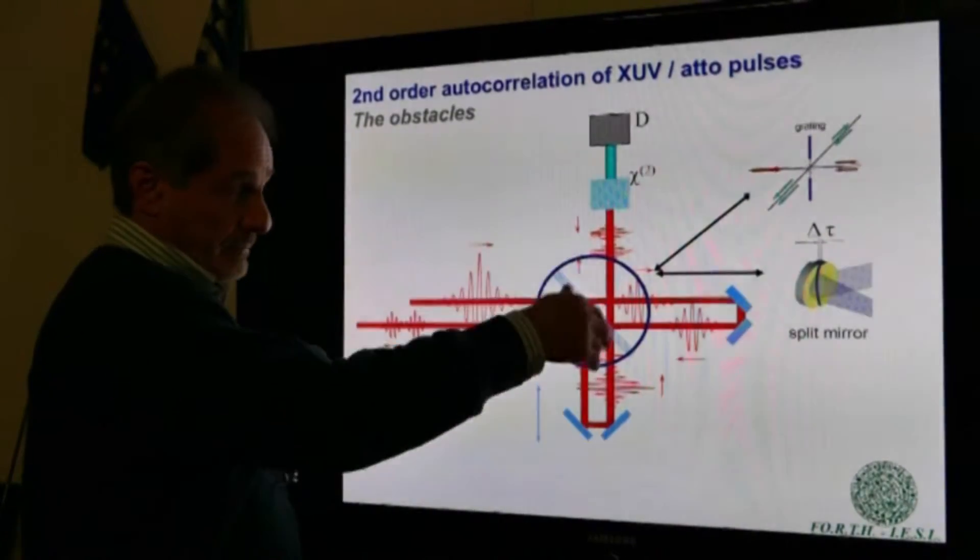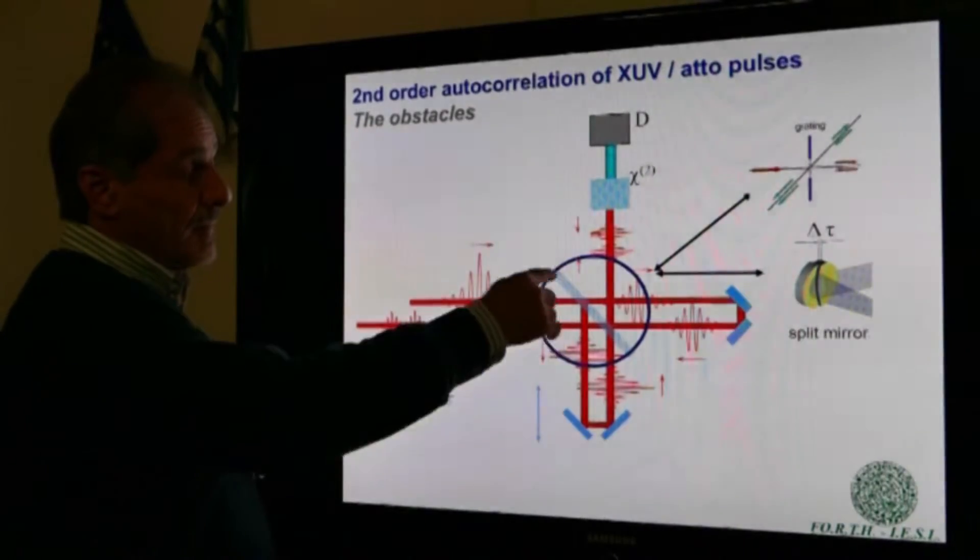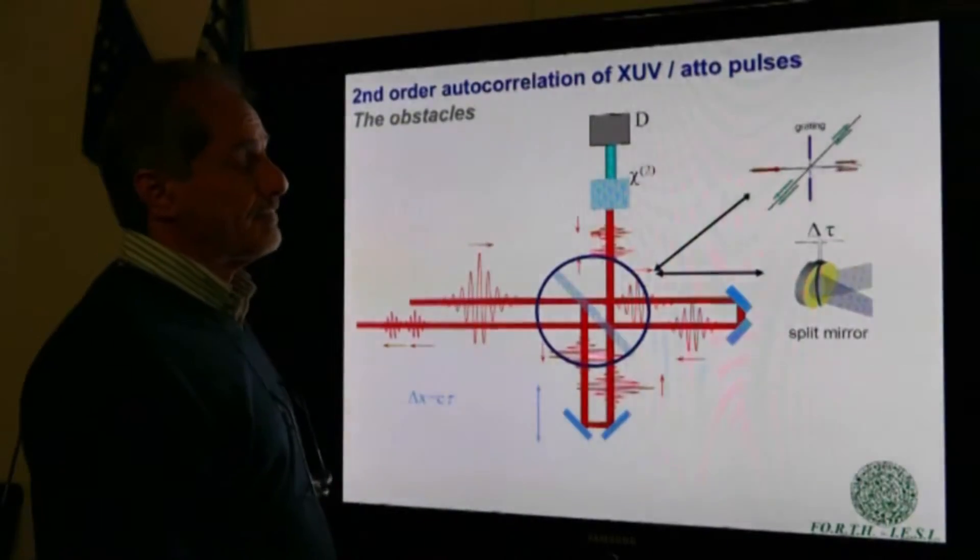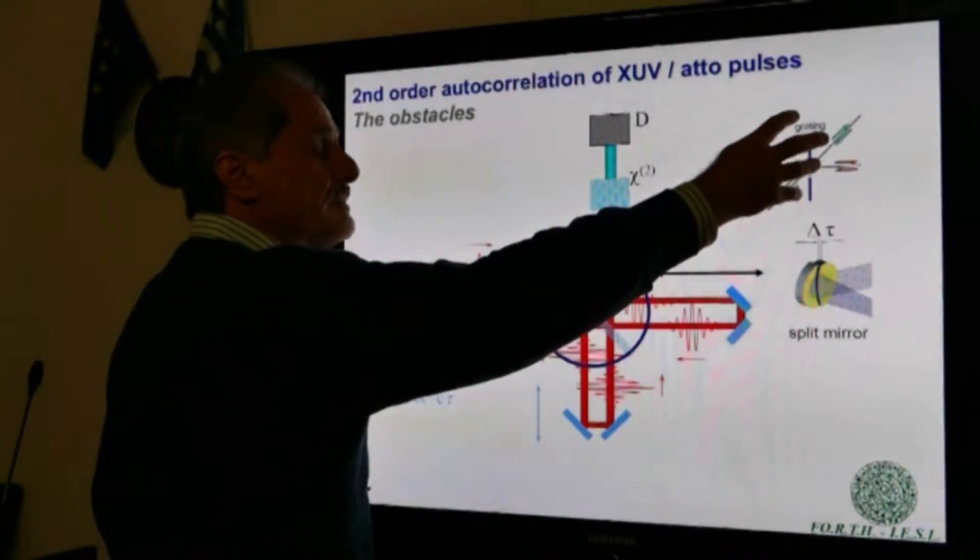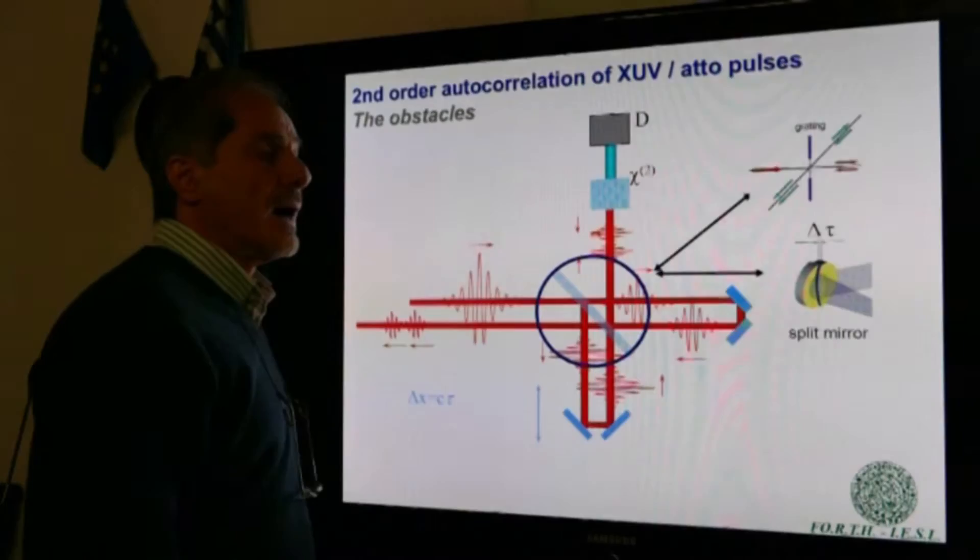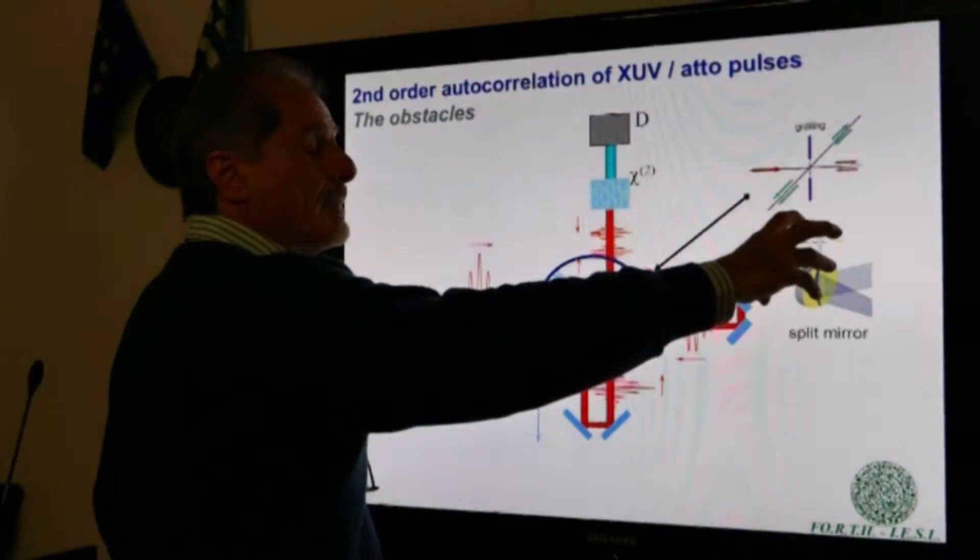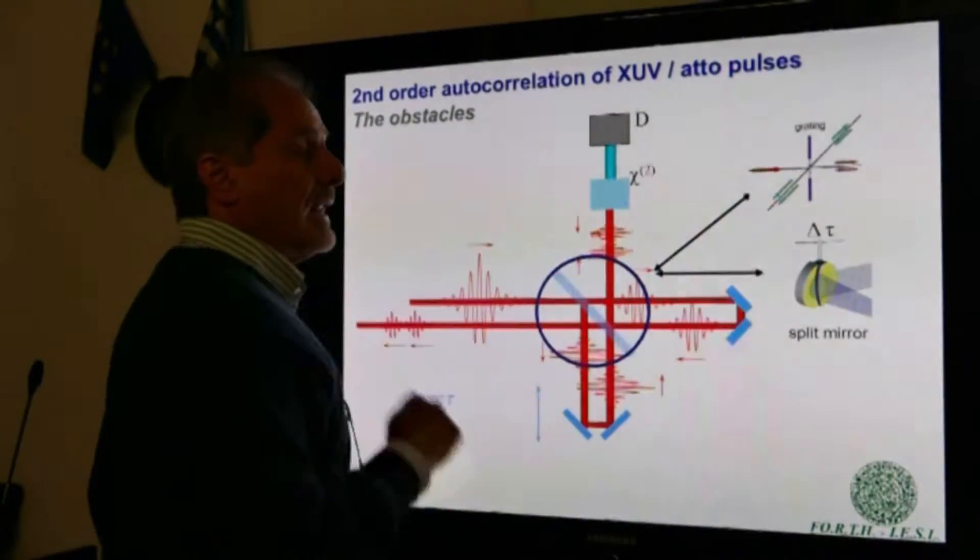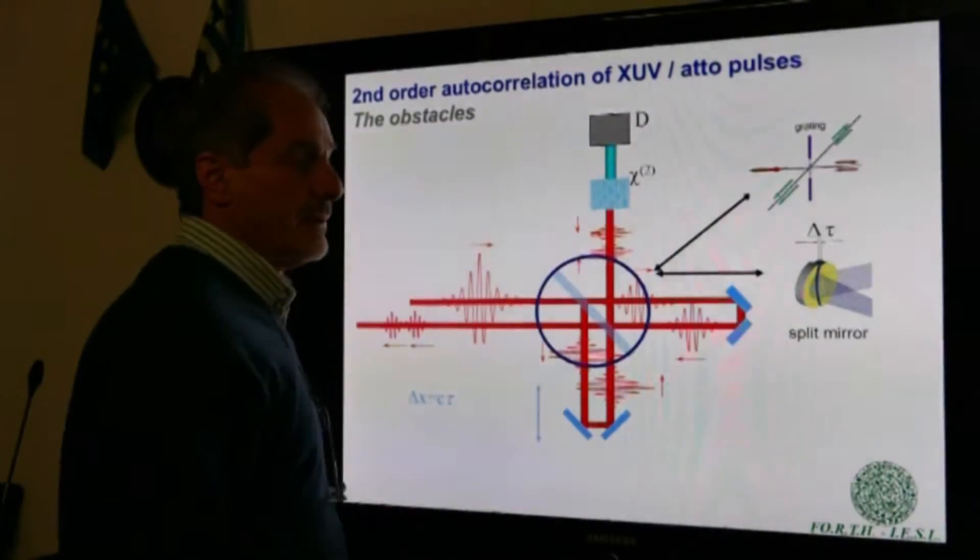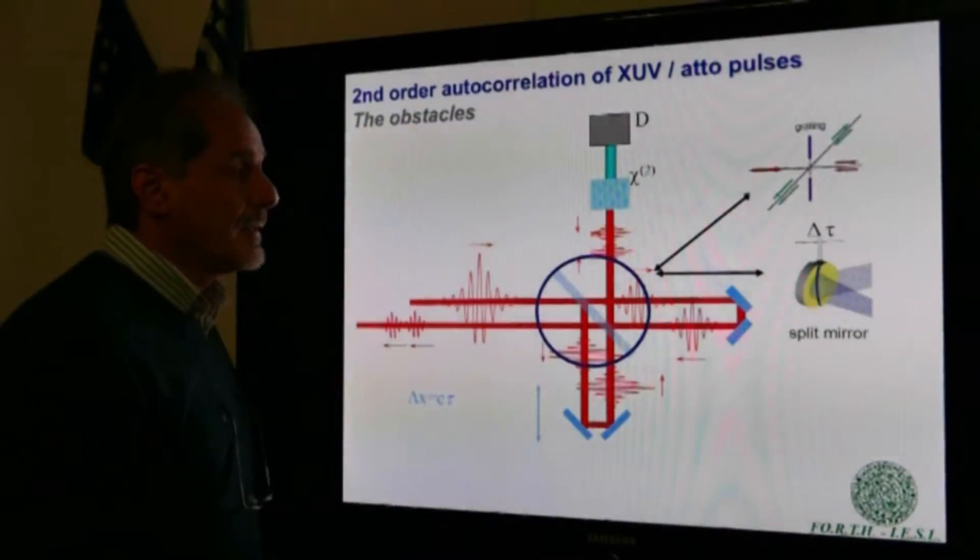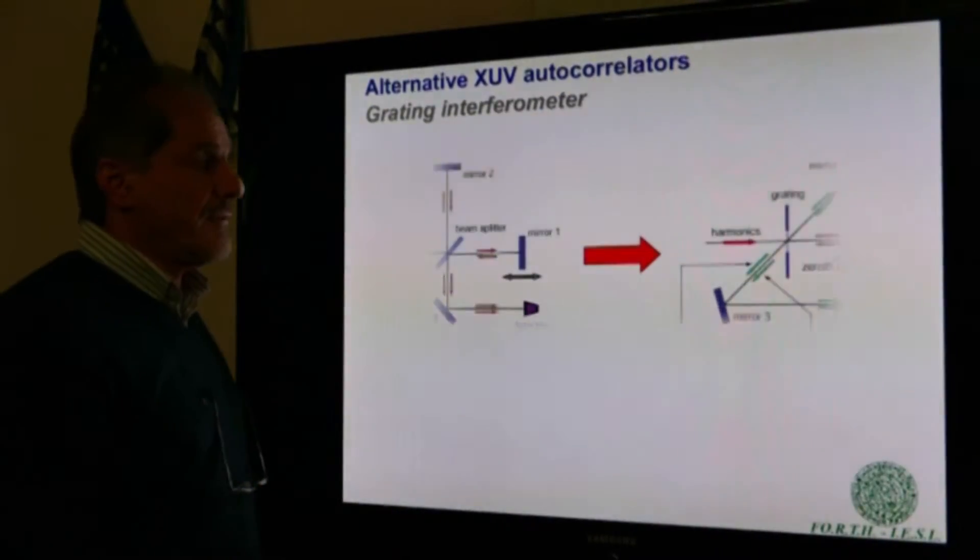The second problem, referring to the beam splitter, can be solved in two ways. One could use a grating as a beam splitter, or an optical element, spherical mirror in this case, cut into two parts. I will start with the first.